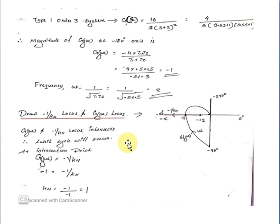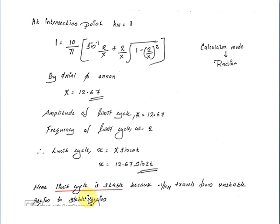We need to find the amplitude of the limit cycle. At the intersection, G(jω) equals minus 1 by KN, and G(jω) equals minus 1. Therefore minus 1 equals minus 1 by KN, giving KN equal to 1. Substituting into the KN equation: 1 equals (10/π) into [sin inverse(2/X) plus (2/X)·root(1 minus (2/X)²)]. Using trial and error method, X is equal to 12.67.